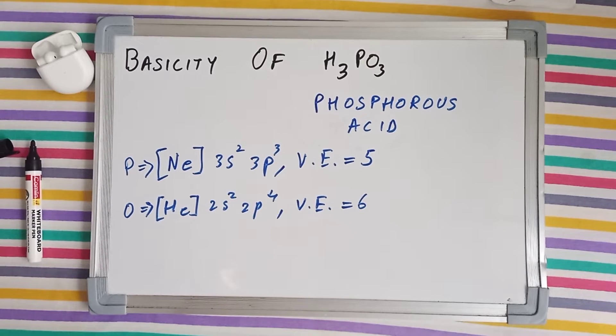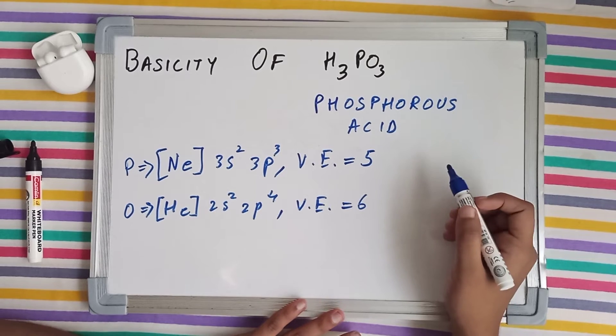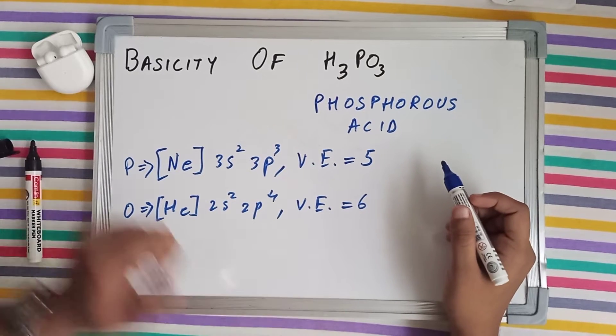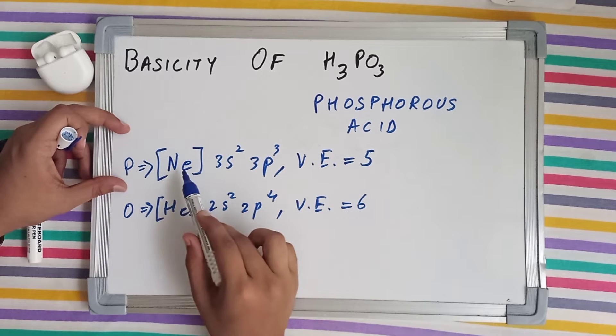Namaste to everybody, welcome to Science Unfiltered. Today we are going to talk about the basicity of H3PO3, which is known as phosphorous acid. Talking about the electronic configuration of phosphorus, it is the inert configuration of neon and then 3s² 3p³.